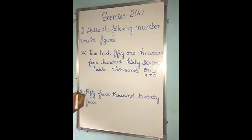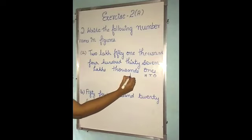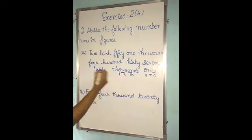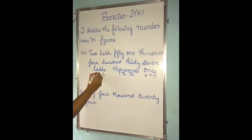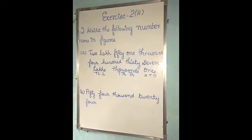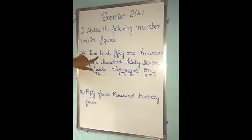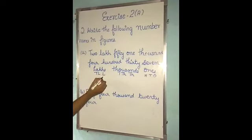The thousands period is divided into 2 places: thousands and ten-thousands. The lakhs period is divided into 2 places: lakhs and ten-lakhs. Here, two lakhs — that means 2 at the lakhs place. So I will write 2 in the place of lakhs.